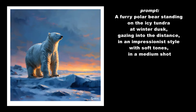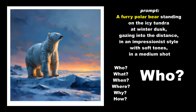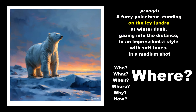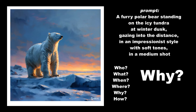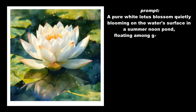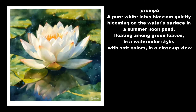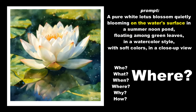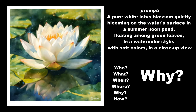Prompt 2: A furry polar bear standing on the icy tundra at winter dusk gazing into the distance in an impressionist style with soft tones in a medium shot. Who: a furry polar bear. What: standing and gazing into the distance. When: at winter dusk. Where: on the icy tundra. Why: reflecting or contemplating its surroundings. How: in an impressionist style with soft tones using a medium shot. Prompt 3: A pure white lotus blossom quietly blooming on the water's surface in a summer noon pond floating among green leaves in a watercolor style with soft colors in a close-up view. Who: a pure white lotus blossom. What: quietly blooming. When: at summer noon. Where: on the water's surface in a pond. Why: natural growth and beauty in nature. How: in a watercolor style with soft colors captured in a close-up view.